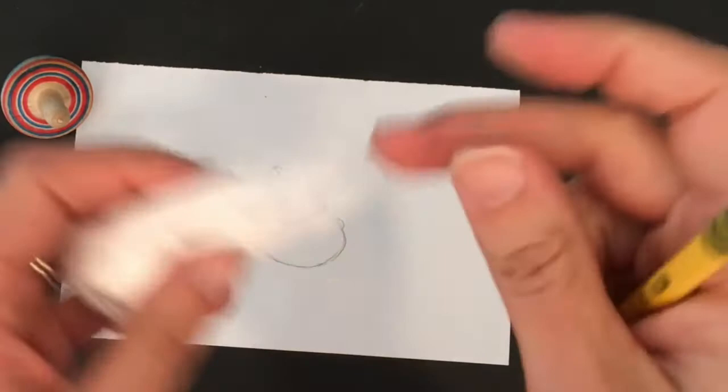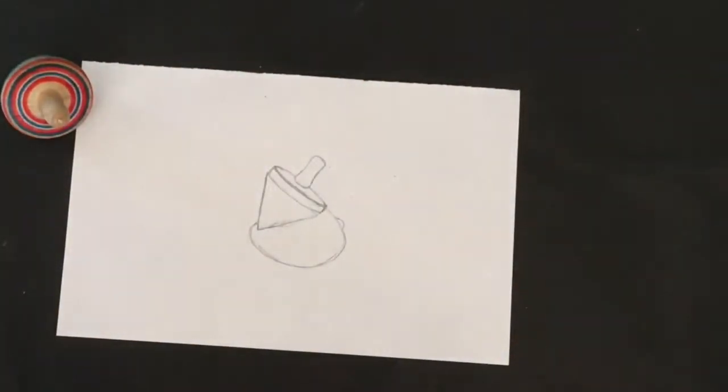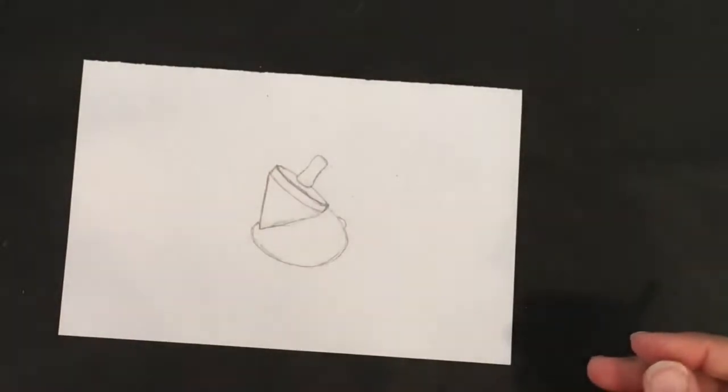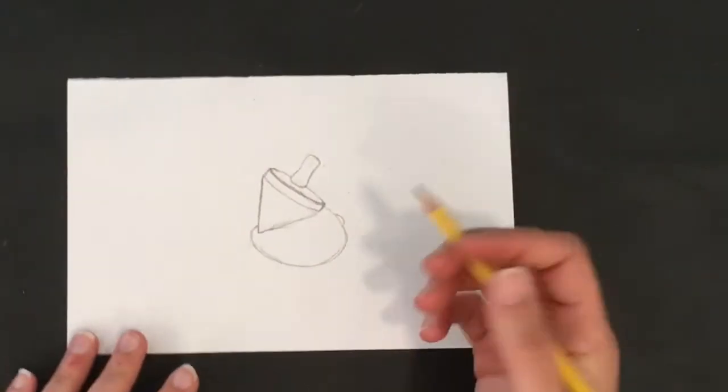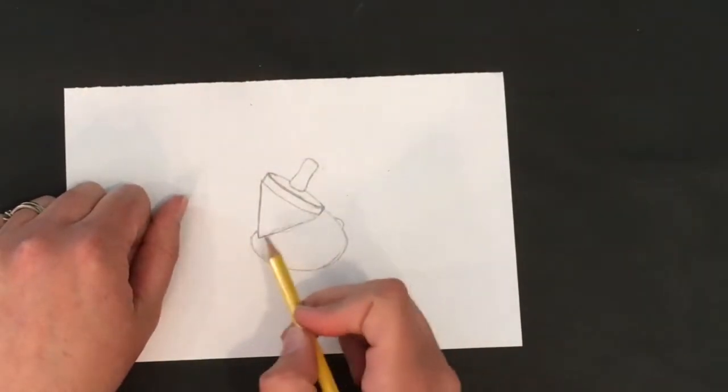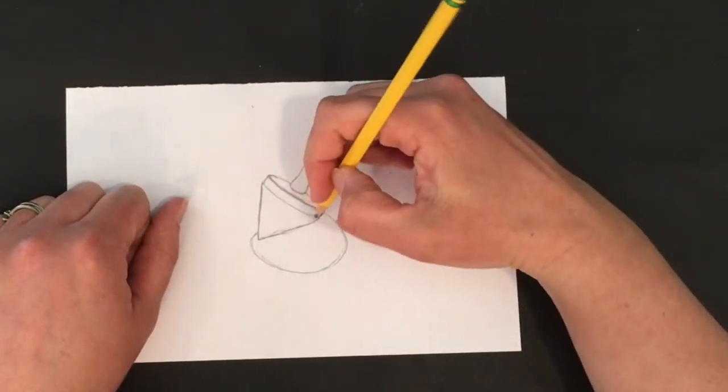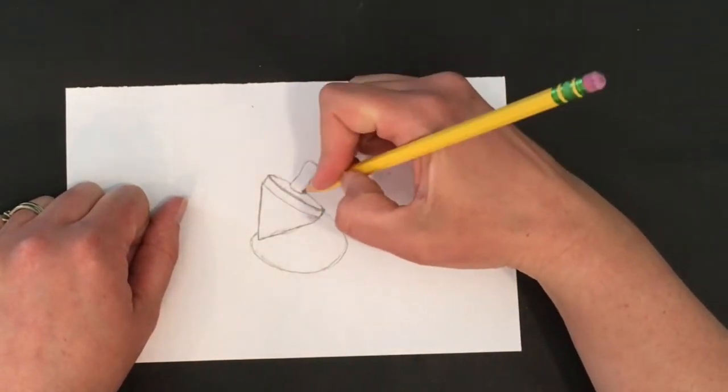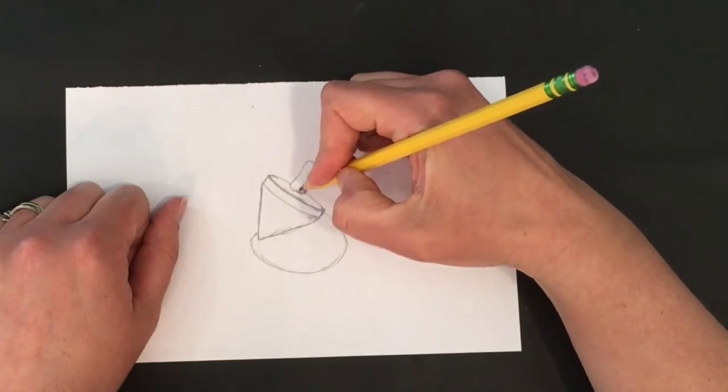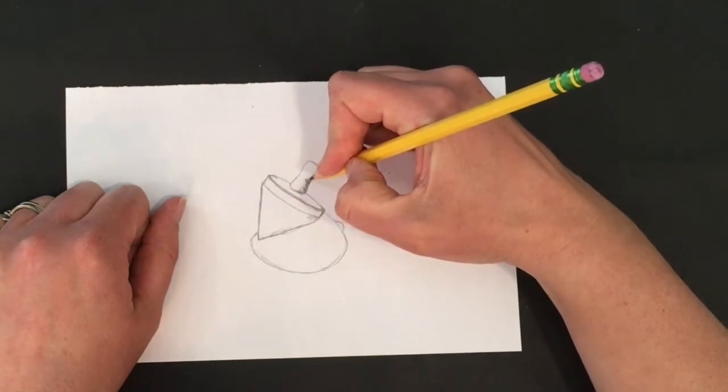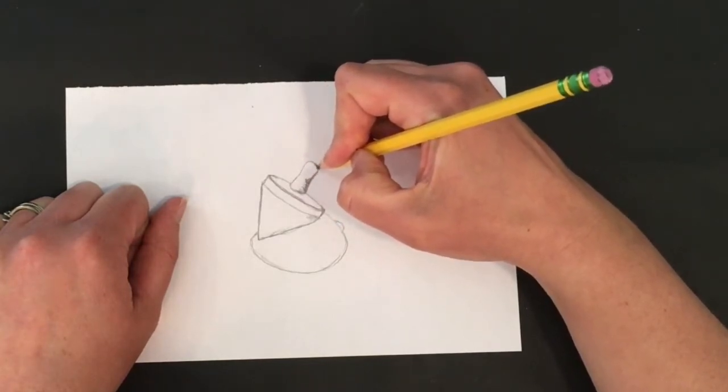Grab any paper you've got to work with. I've got my number two pencil, got a little bit of tissue here for some blending. I'm going to get started. I'm going to keep this top just off to the side so I've got more drawing space, but you can see that I've been drawing from observation here.